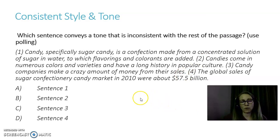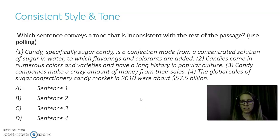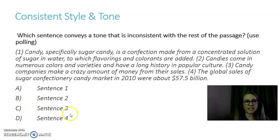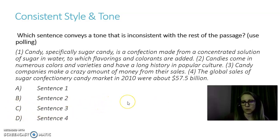Next, consistent style and tone: which sentence conveys a tone that is inconsistent with the rest of the passage? Pause and read through the paragraph. After pausing and taking a look, I believe you will find that sentence three — option C — is inconsistent with the others. Consider why that's the case.